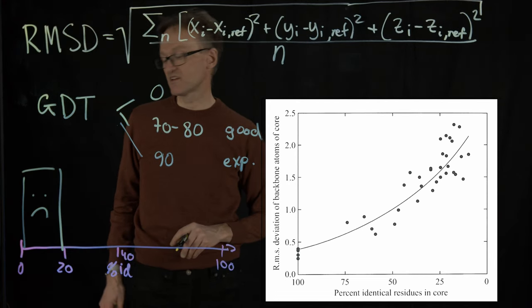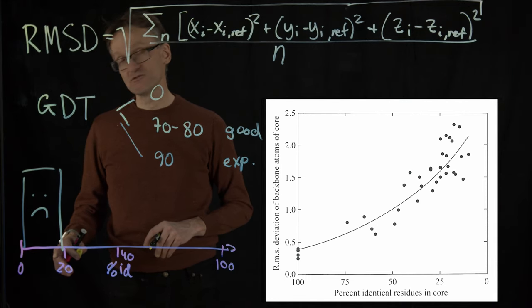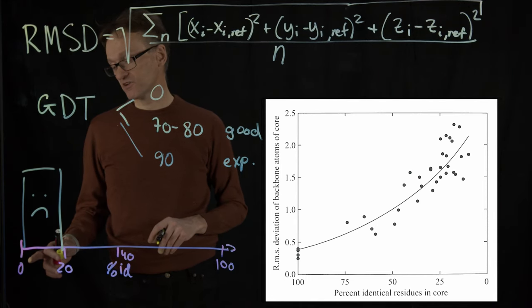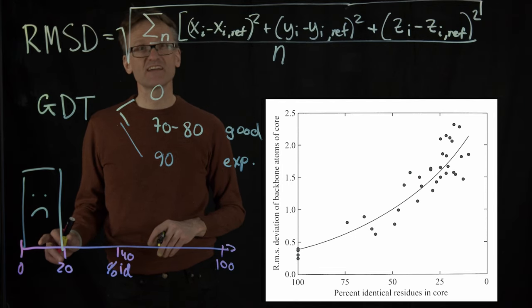This is the so-called midnight zone, below 20% sequence identity. I can't really say anything. I wouldn't trust it. That doesn't mean that the sequences are not homologous. It's just that I can't say for certain.